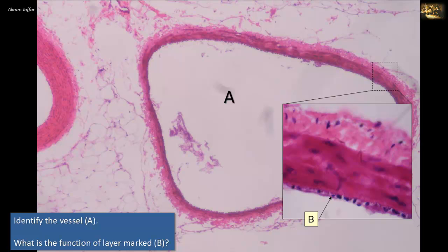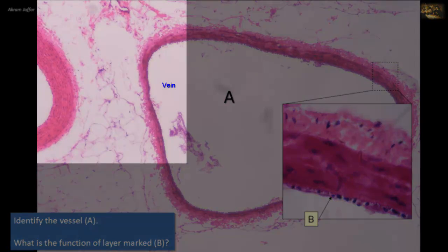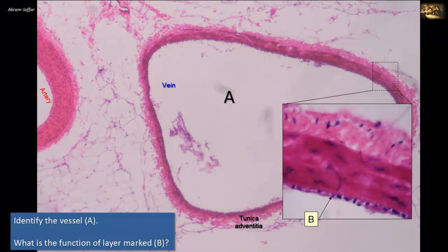Identify vessel A. What is the function of the layer marked B? Vessel A is a vein. Note the large lumen in comparison to the thin wall, and compare it to the much thicker wall of a nearby artery. The tunica adventitia is specifically thick in multiple places around the circumference, which is typical of a vein. In a vein, the low pressure of blood doesn't necessitate thick walls. Elastic fibers, as seen in elastic arteries or as internal/external elastic laminae of muscular arteries, are rarely seen in muscular veins because variations in venous pressure between systole and diastole are insignificant.